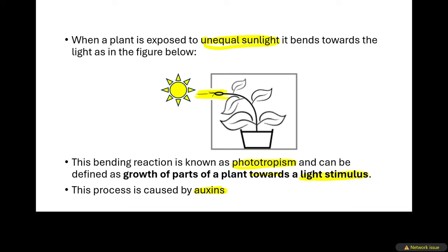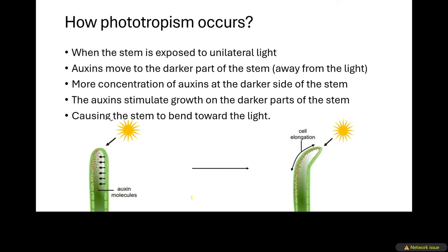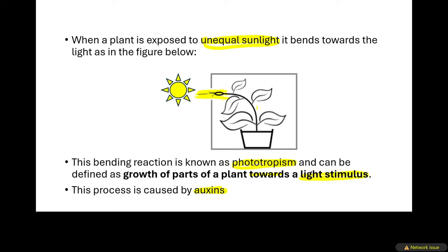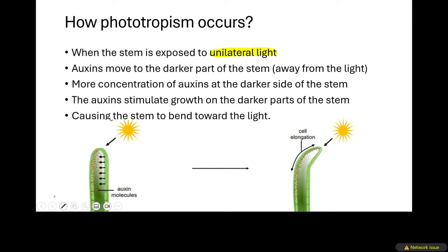Now let's discuss how phototropism occurs. When the stem is exposed to unilateral light — meaning light from one side — as you can see in this image where the plant is in a box receiving light from only one side, phototropism only occurs when the plant is exposed to unilateral light. You must explain this to earn a mark: the light is from one side, or the light is unilateral.